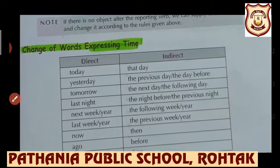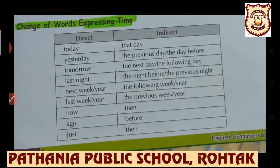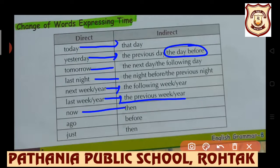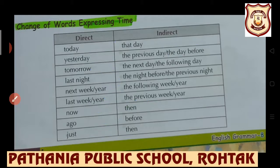These are the changes of words expressing time that you need to remember: 'today' changes into 'that day'; 'yesterday' changes into 'the previous day' or 'the day before'; 'tomorrow' changes into 'the next day' or 'the following day'; 'tonight' changes into 'the night before' or 'the previous night'; 'next week/year' changes into 'the following week/year'; 'last week/year' changes into 'the previous week/year'; 'now' changes into 'then'; 'ago' changes into 'before'; 'just' changes into 'then.'